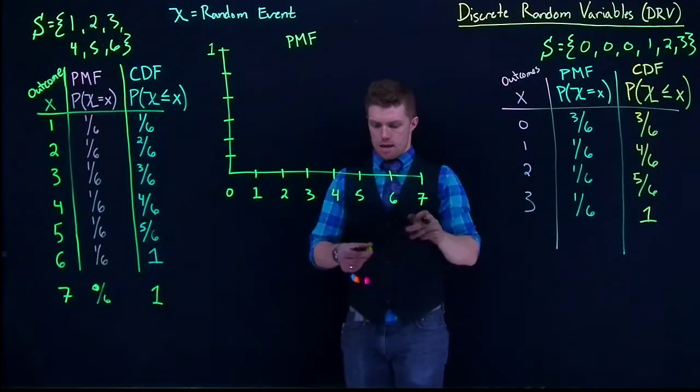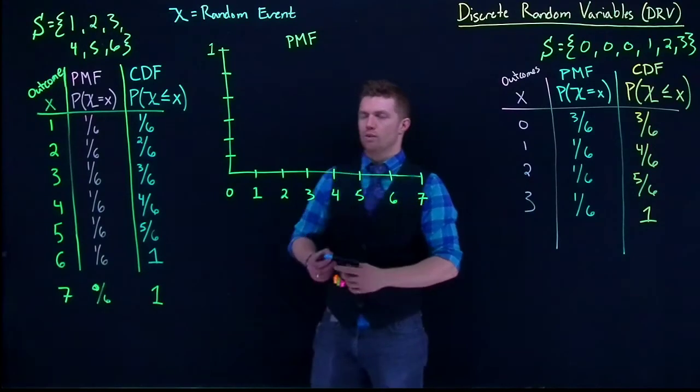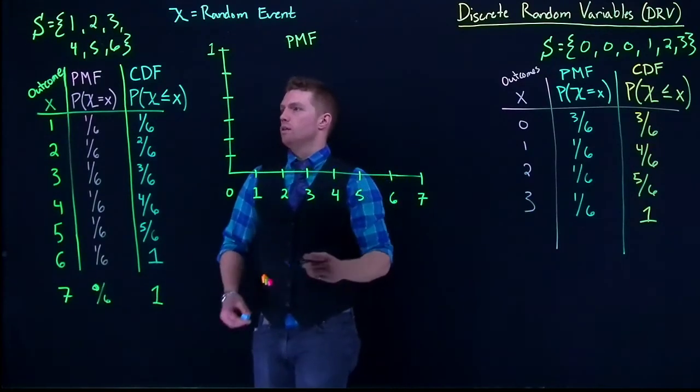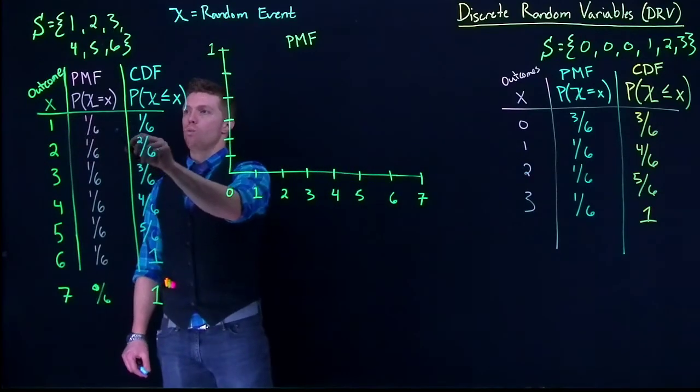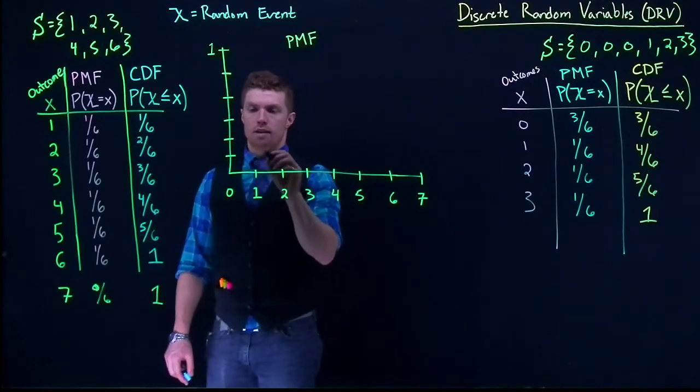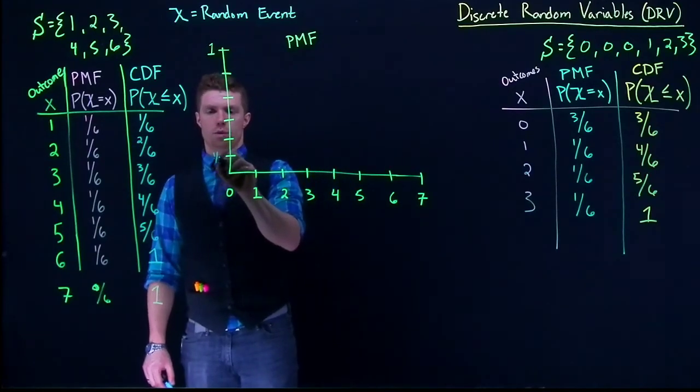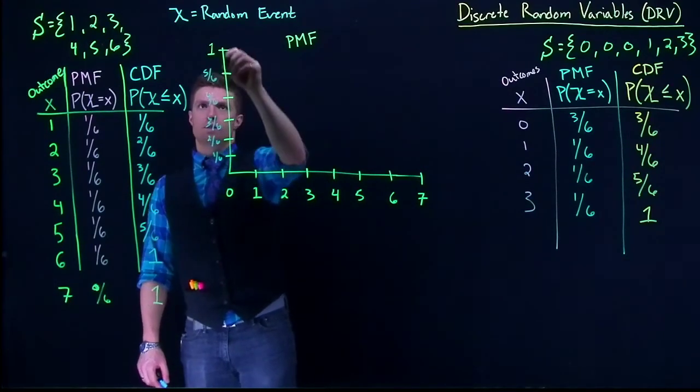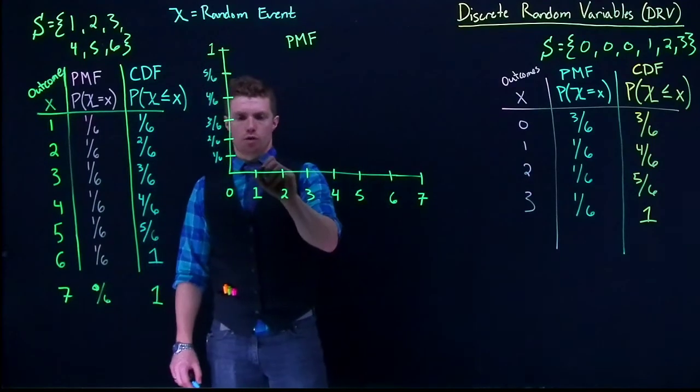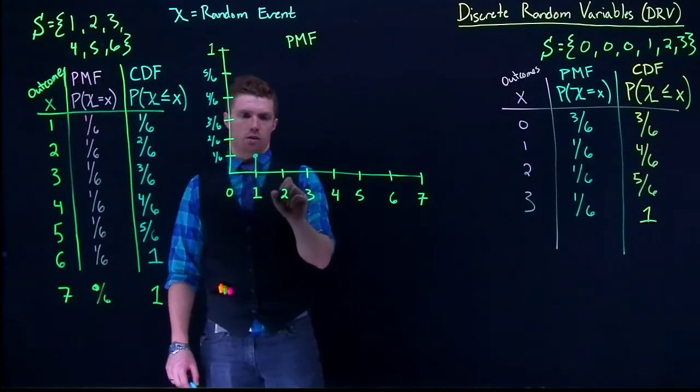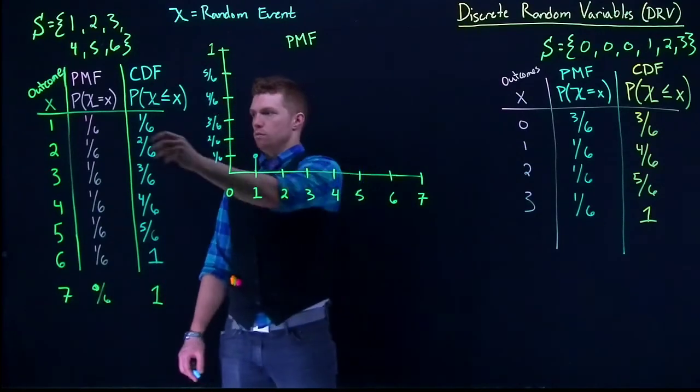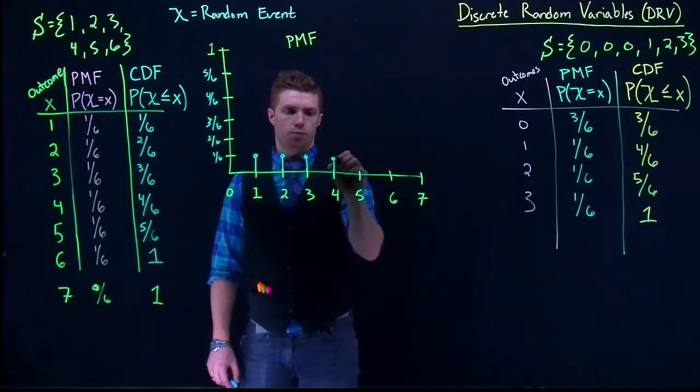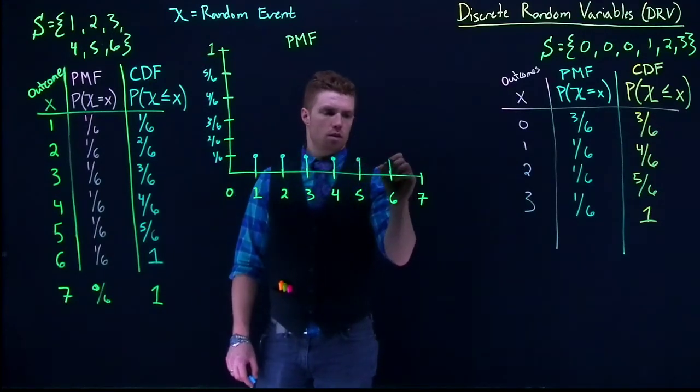We've got our PMF and how we draw these is a little bit different. They're basically like these stems with a little circle at the top. The probability that we roll a 1 with this standard dice is 1/6. So we draw a little line and a little circle or peg at the top and then 2 is the same probability. We draw a little guy up and if you notice these are all the same.